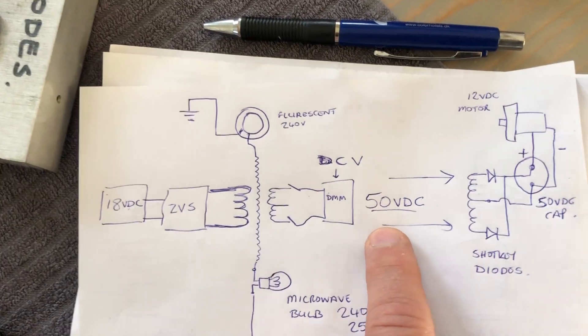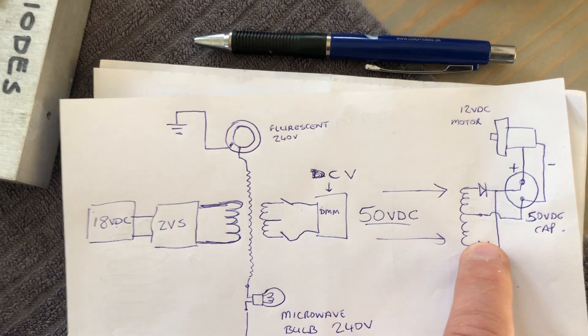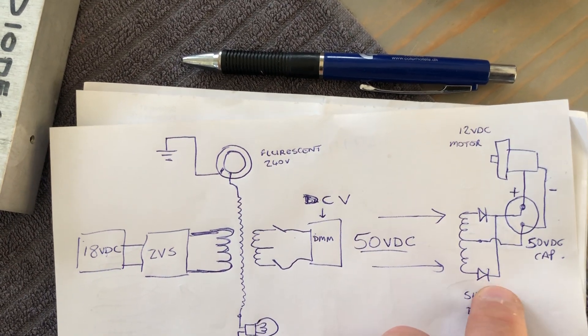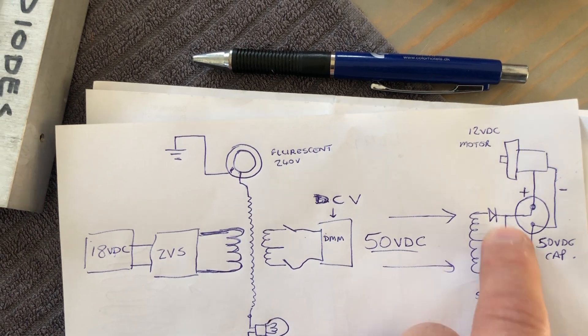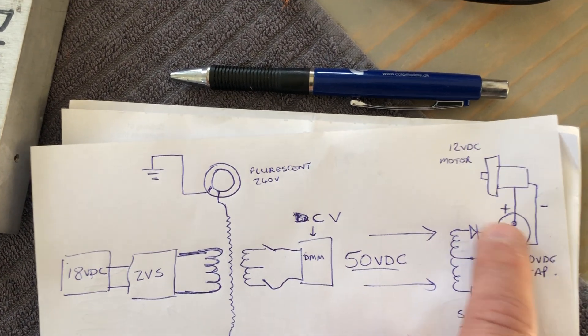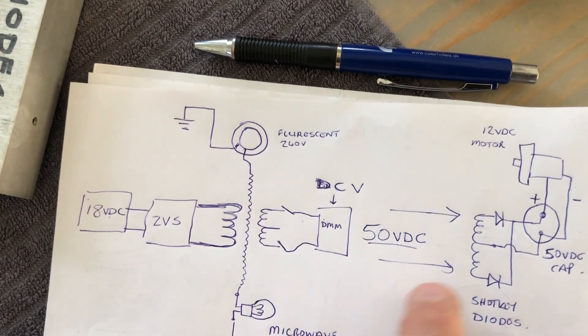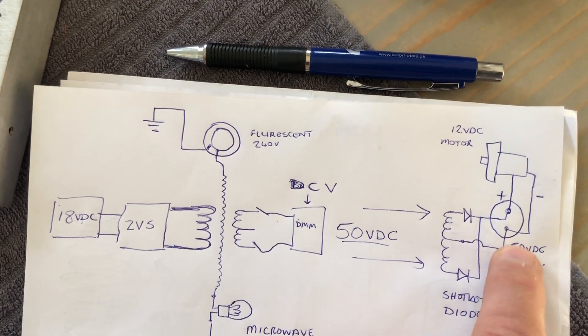So, I decided to add Schottky diodes to the bifiler, so two sides of the bifiler will connect into the positive, and the middle, center tap, if you like, will connect to the negative.